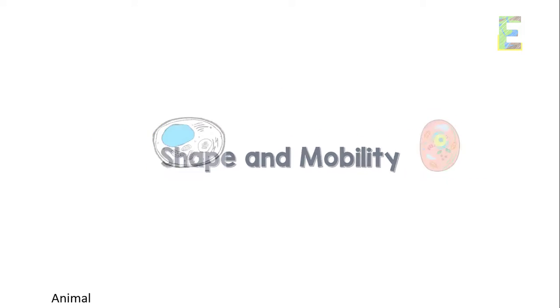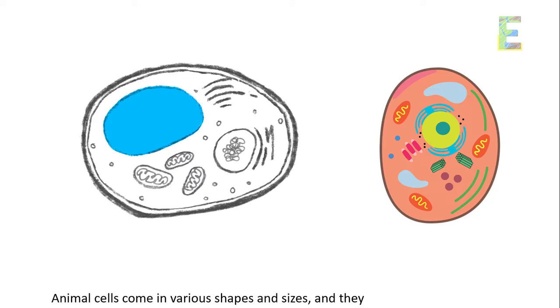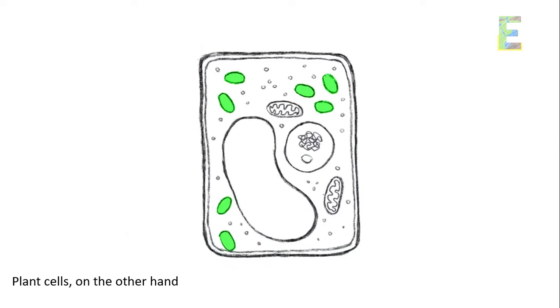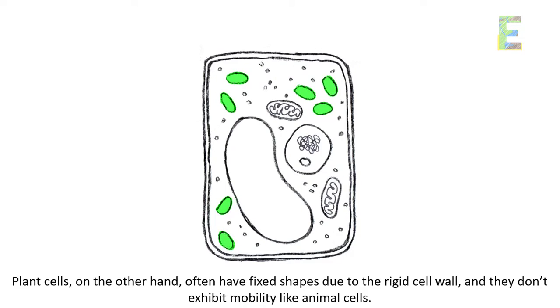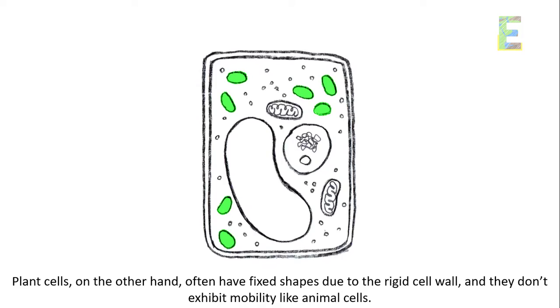Shape and mobility. Animal cells come in various shapes and sizes, and they can move independently. Plant cells, on the other hand, often have fixed shapes due to the rigid cell wall, and they don't exhibit mobility like animal cells.